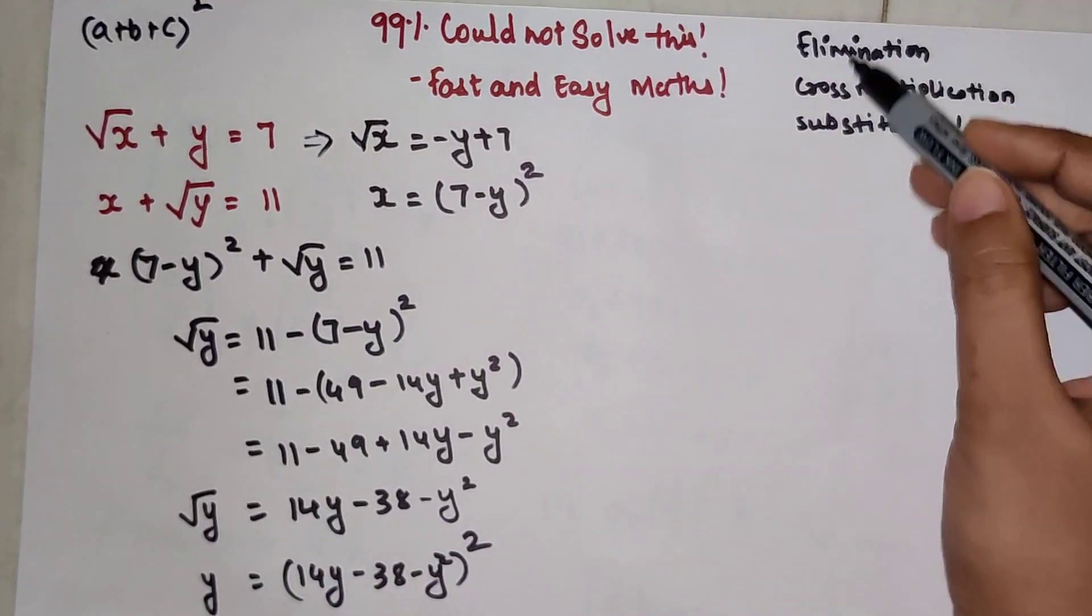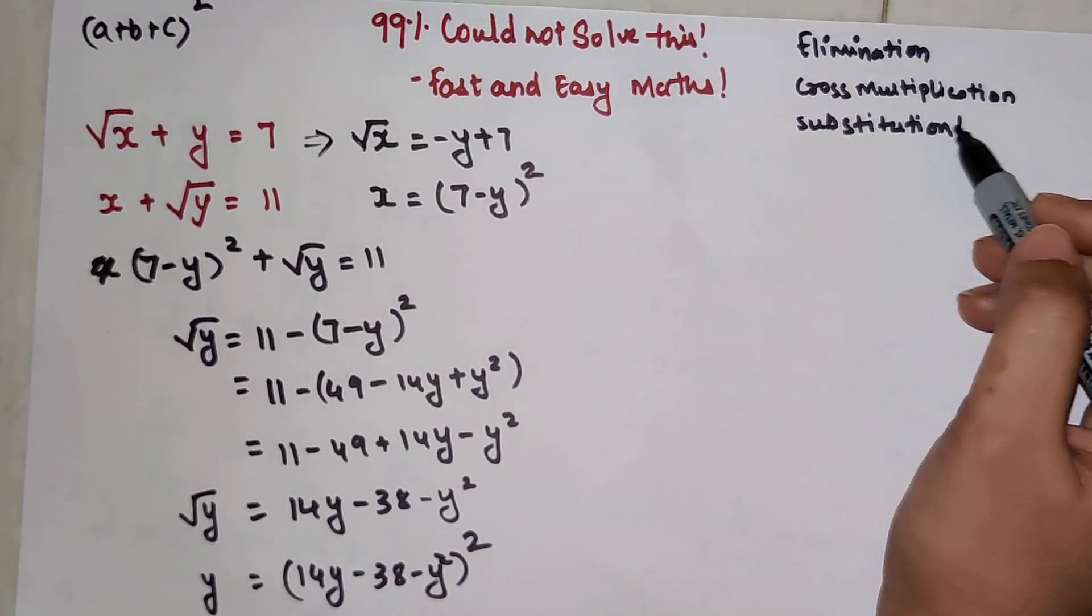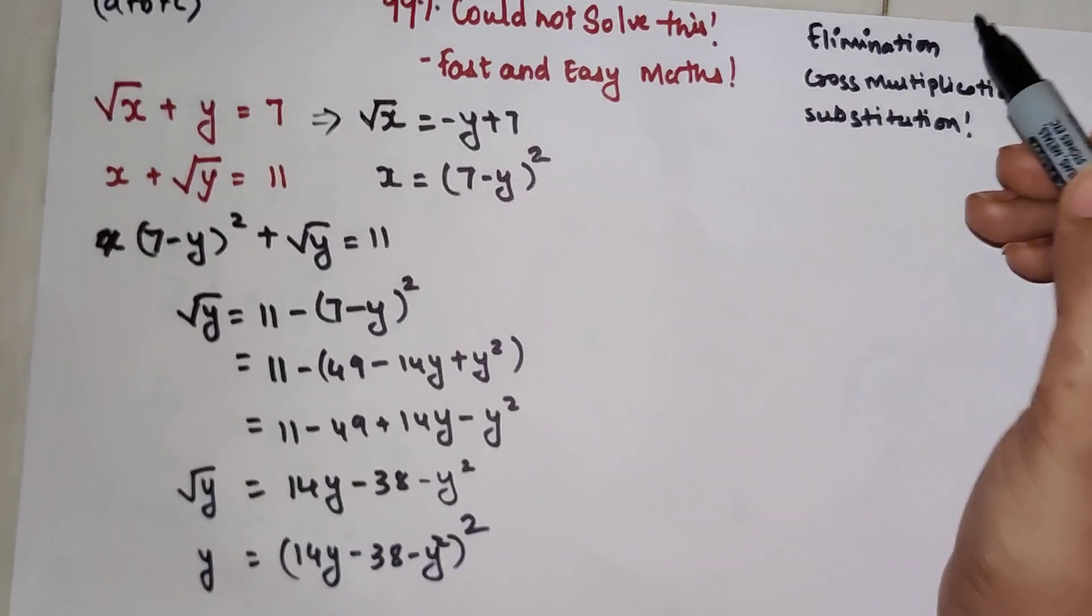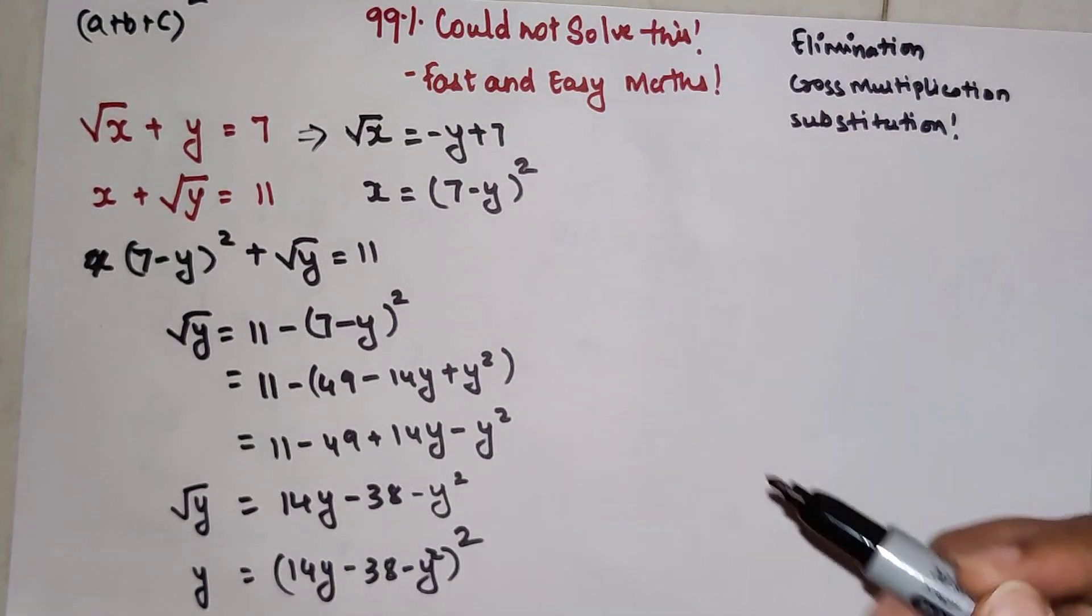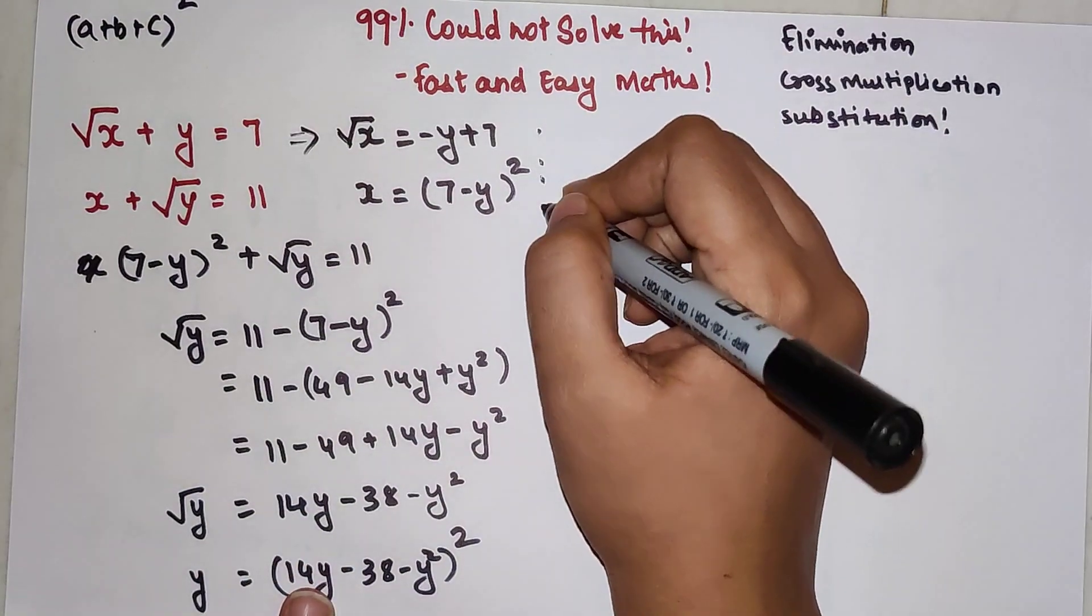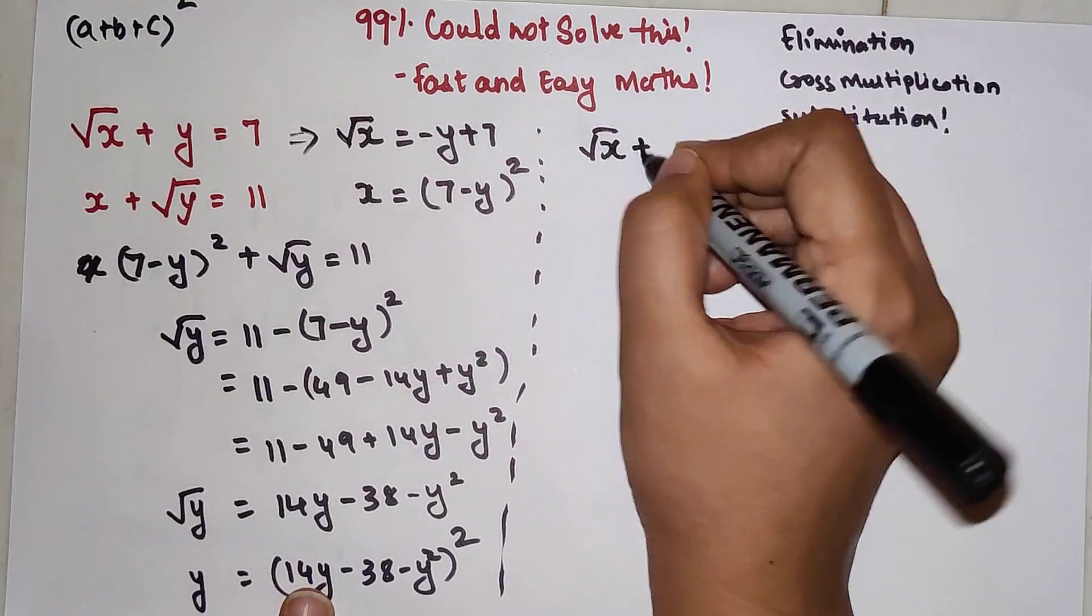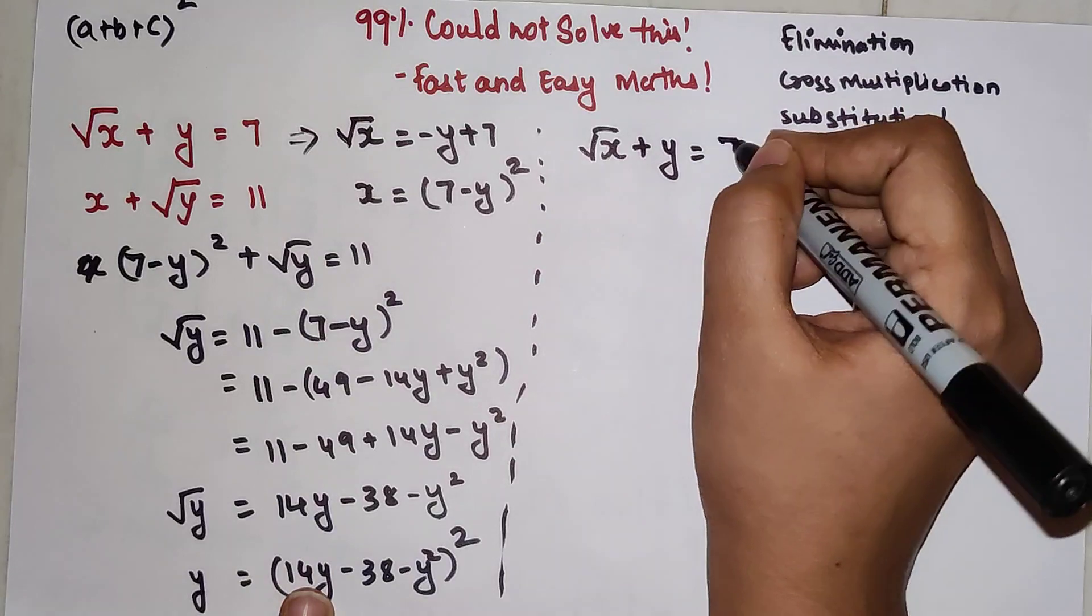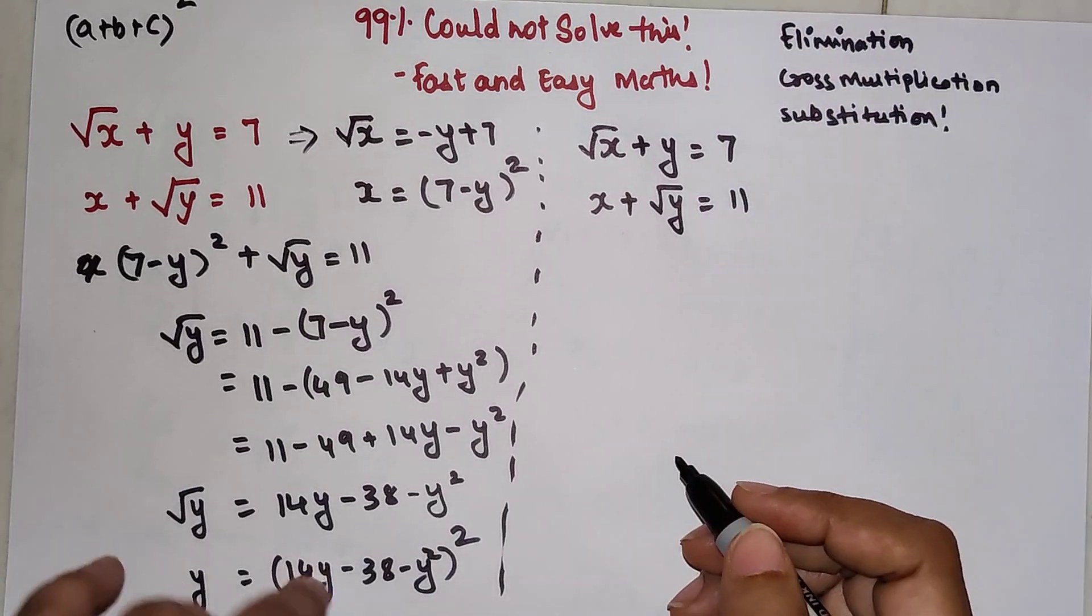We used substitution method. If we had used cross multiplication or elimination, we would have still got stuck and there's possibility to make a lot of mistakes. So what did Ramanujan do? It's very simple. If you like the way I'm explaining, please hit the like button as that gives me tremendous encouragement.